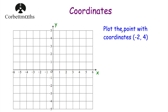This time we've been asked to plot the point with coordinates (-2, 4). The x-coordinate is negative 2, so we go to negative 2. Then we go up 4 — 1, 2, 3, 4. So that's our point there. We put a little x and label it (-2, 4).